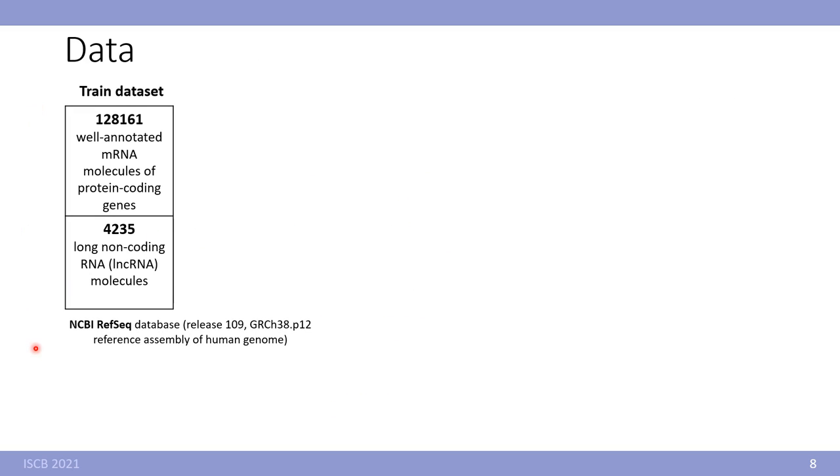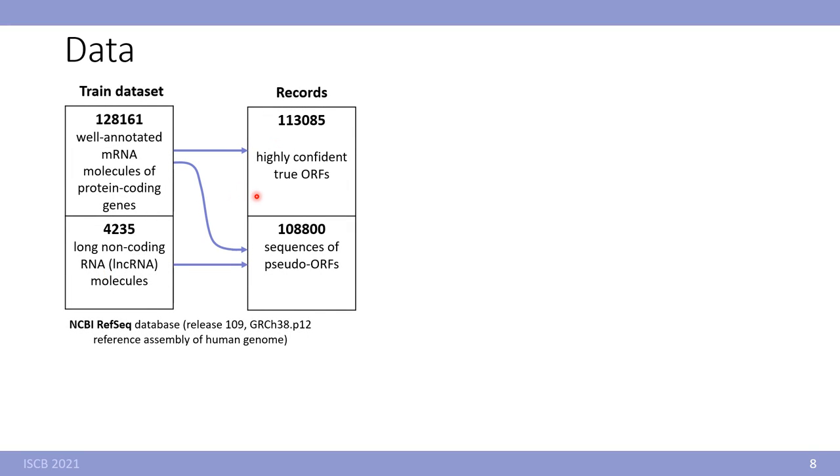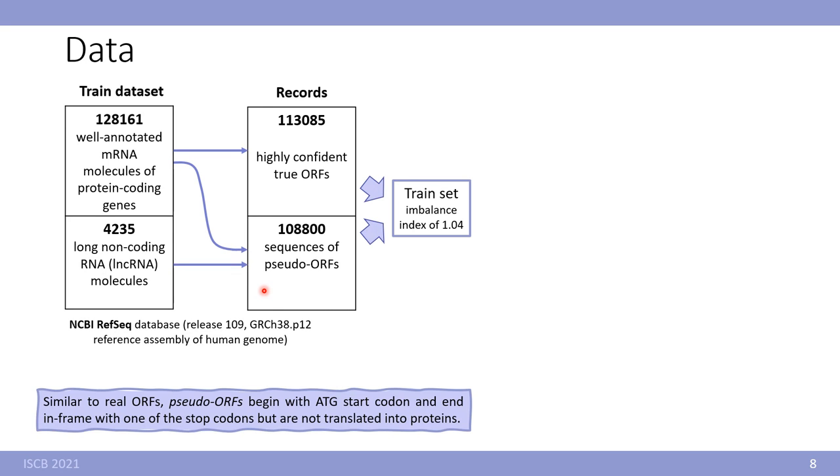For training data we downloaded NCBI dataset. We got 128,000 well annotated protein coding mRNAs and we added 4,000 long non-coding RNA. After extraction of ORF candidates we got 130,000 highly confident true open reading frames and 108,000 pseudo open reading frames. Pseudo open reading frames look like real ORF but they are not translated into proteins.